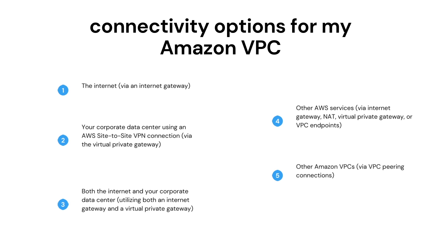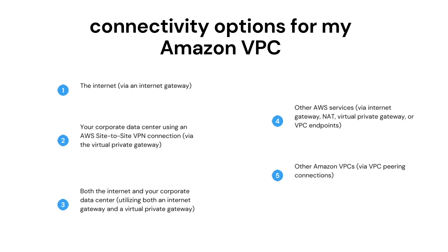The next question is: what are the connectivity options for my Amazon VPC? First is Internet Gateway — we can use it to provide internet access to the VPC and the hosted resources. Second is VPC connection — we can use site-to-site VPN to establish private connectivity to AWS VPC. Third, we can use peering connections or VPC peering to establish connectivity between multiple VPCs on a private level. Fourth, we can use the Virtual Private Gateway and Internet Gateway together to connect to the VPC.